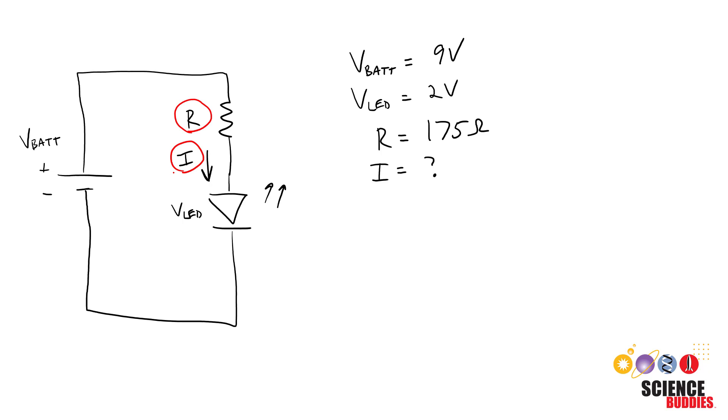This is different than starting with a desired value for the current and then doing the calculations to choose the proper resistor. To see that version of the problem, check out the previous video in this playlist linked in the description. In that video, we started with a desired current of 40 milliamps for the LED with a known battery voltage of 9 volts and a forward voltage drop over the LED of 2 volts, and we then solved for the required resistor value to make that current happen, which was 175 ohms.